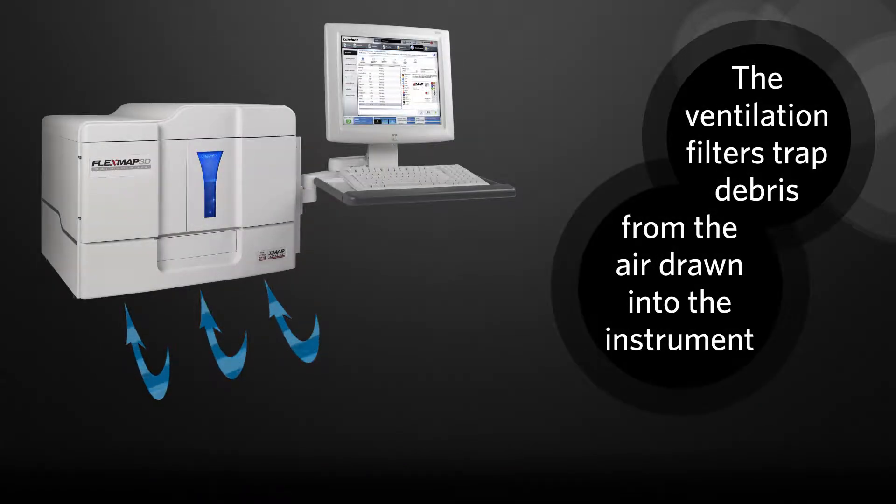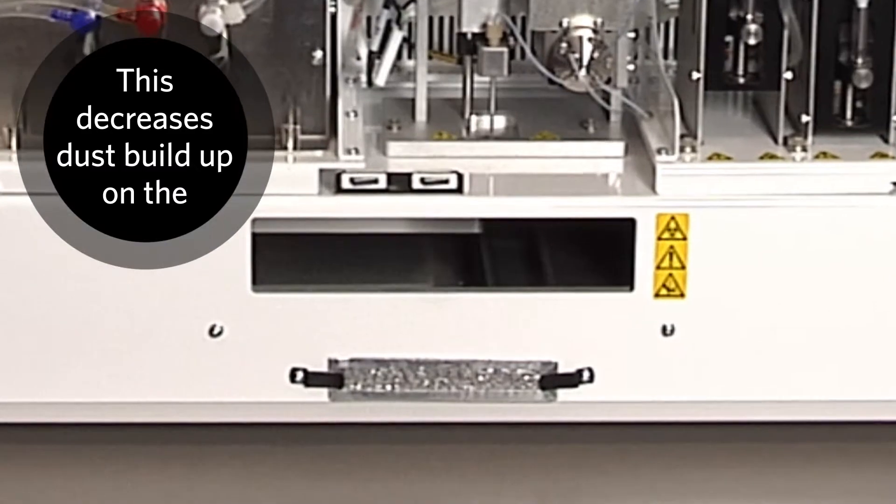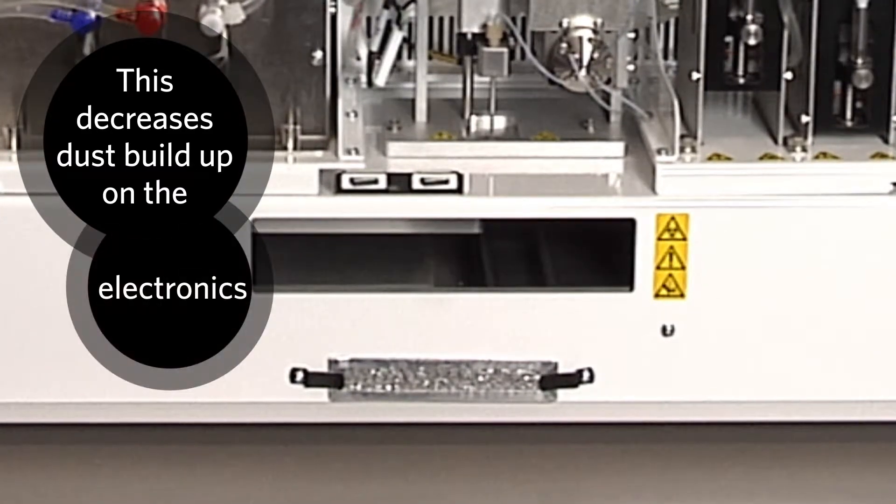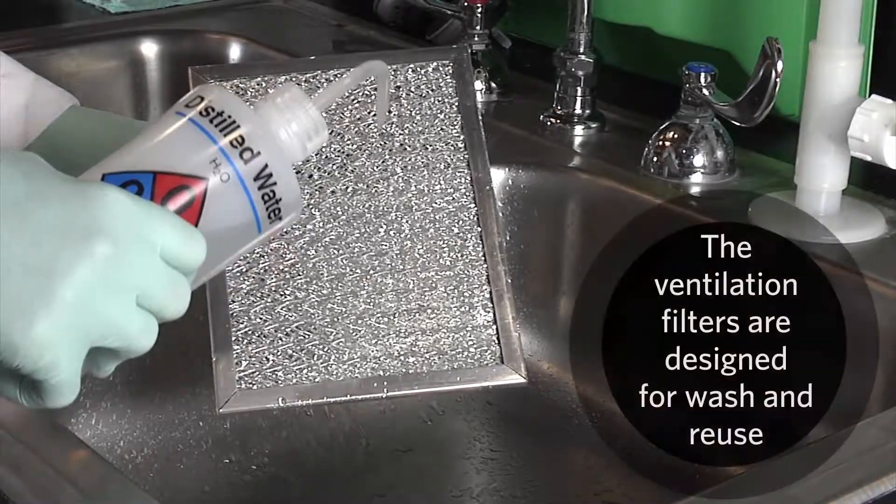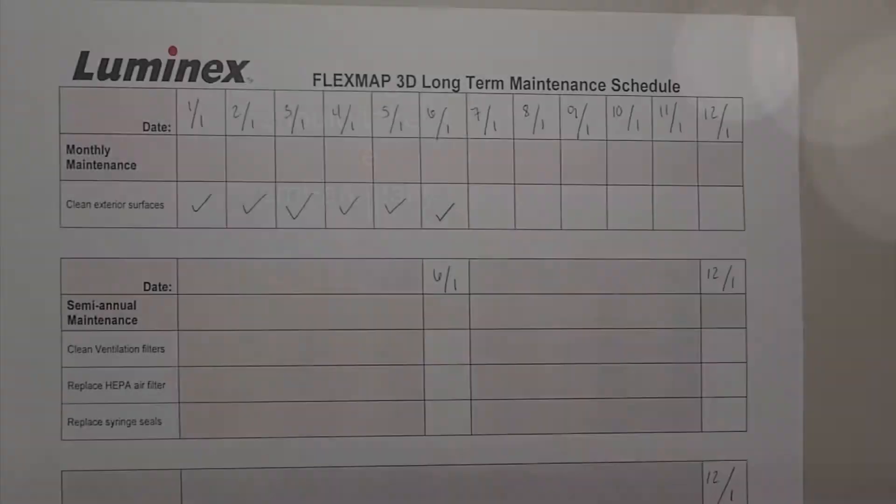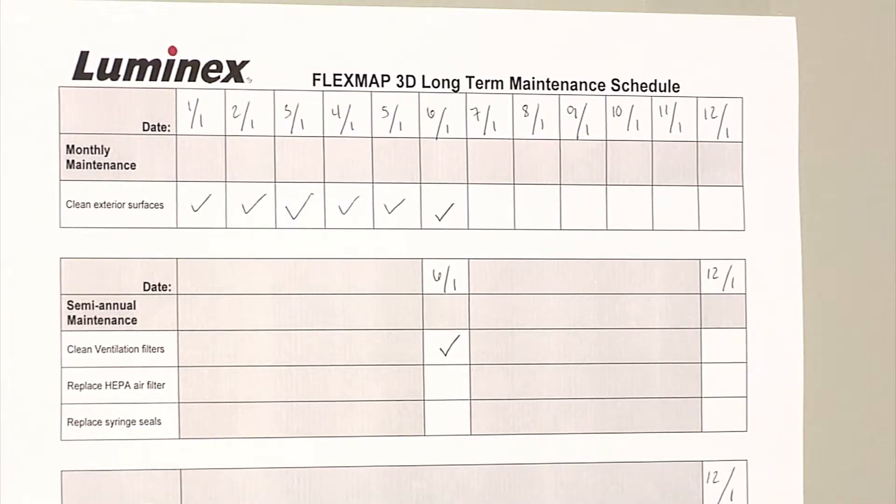Why should I clean the ventilation filters? The ventilation filters trap debris from the air drawn into the FlexMap 3D instrument. Cleaning the air pulled into the instrument decreases dust buildup on the electronics and the main bay where the sample probe is housed. The ventilation filters are designed for wash and reuse. Cleaning should take place semi-annually to prevent clogging of the airflow to the instrument.